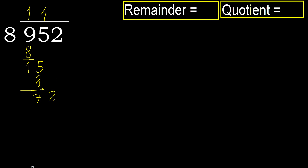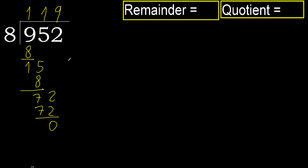Next, bring down to get 72. 8 multiplied by 9 is 72, which is not greater. Subtract.